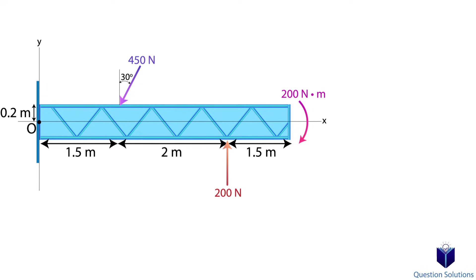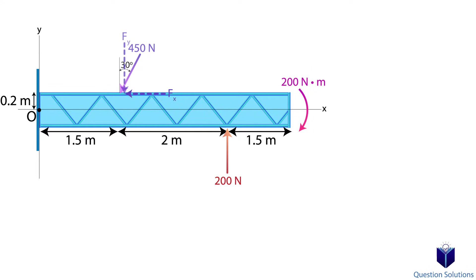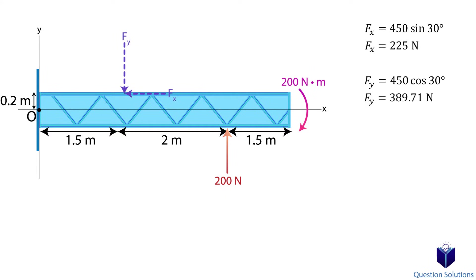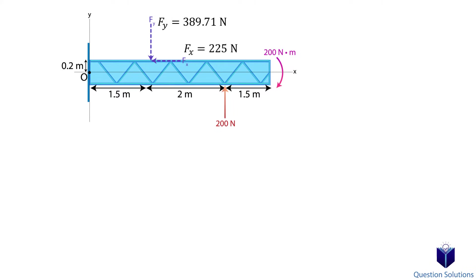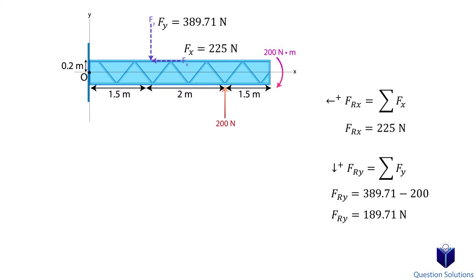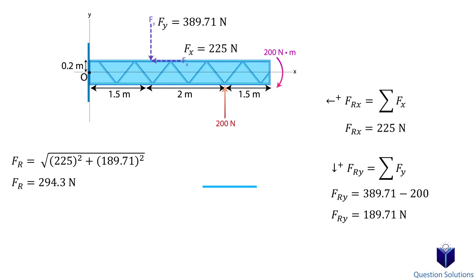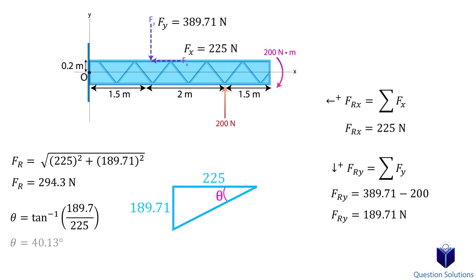The 450-newton force can be broken into its x and y components. The 200-newton force only has a y-component, so we don't need to break it into separate components. We will pick down and to the left to be positive. Adding up the x-components, then the y-components — note that since we picked down to be positive, the 200-newton force facing upward will be negative. We can find the resultant force by finding the magnitude, and we also need an angle to show the direction. Using tan inverse, we can find theta.